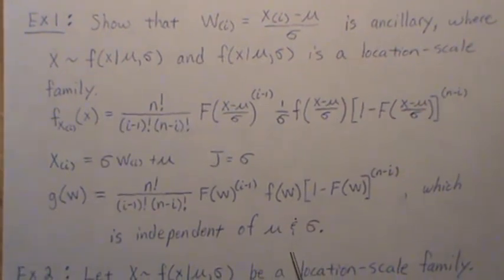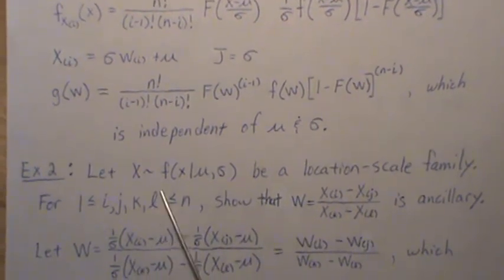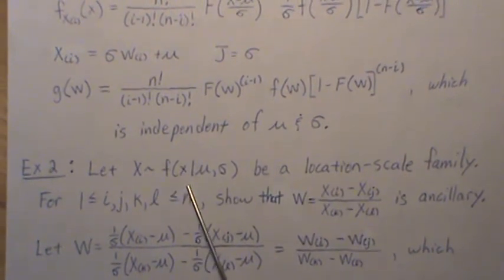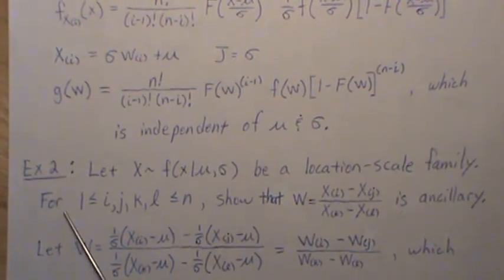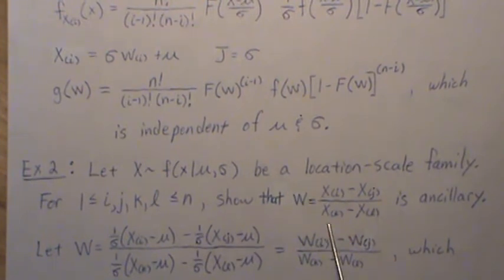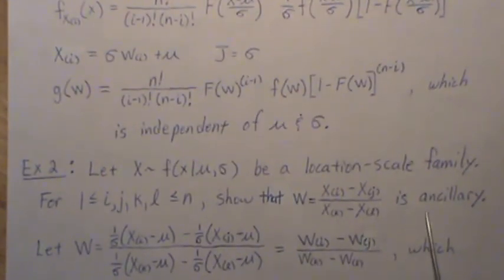Okay, now I introduced that one because of the next example, which I think is quite cool. So, we're going to let X be distributed with F, F of X given mu and sigma, and it is a location scale family, and for i, j, k, and L between 1 and n, we're going to show that this is an ancillary statistic, so Xi minus Xj divided by Xk minus XL, it's ancillary.